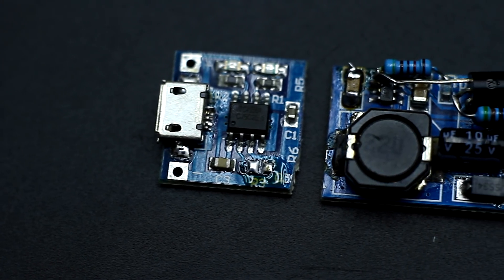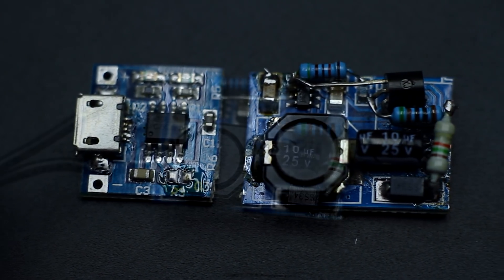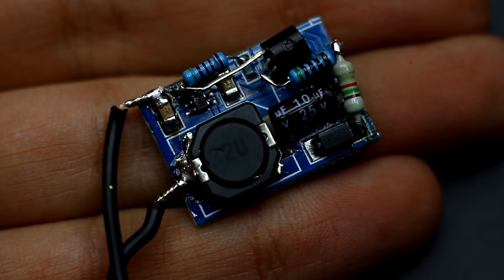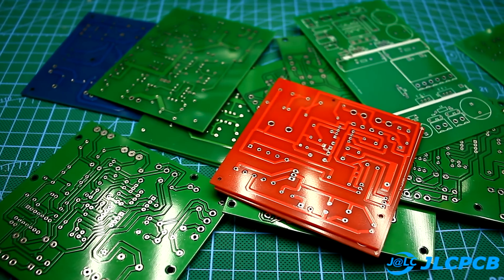Of course, you can do everything prettier by etching the new board, but I don't see the point, because only a few components have been added to the circuit and an outboard assembly is quite sufficient.